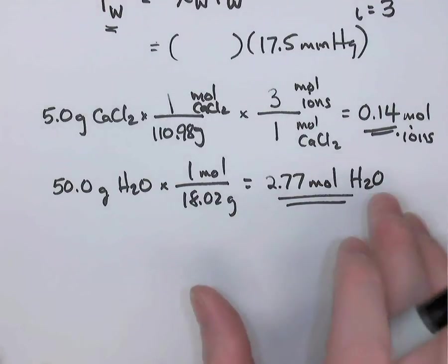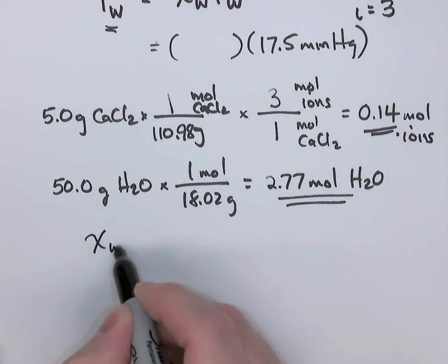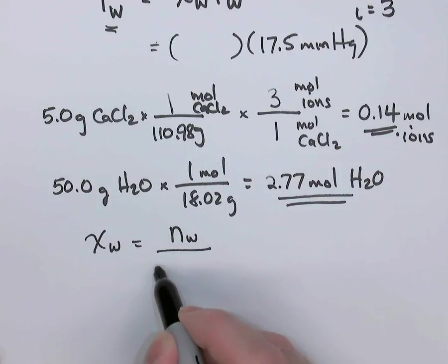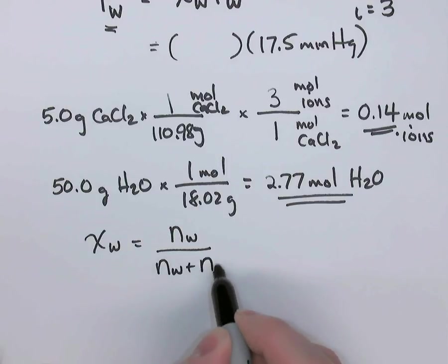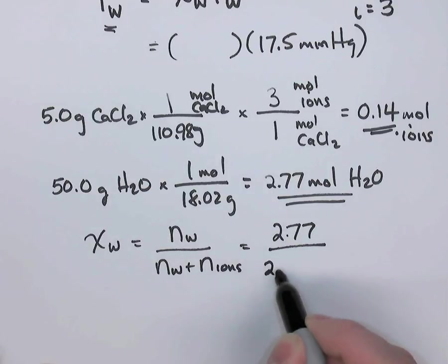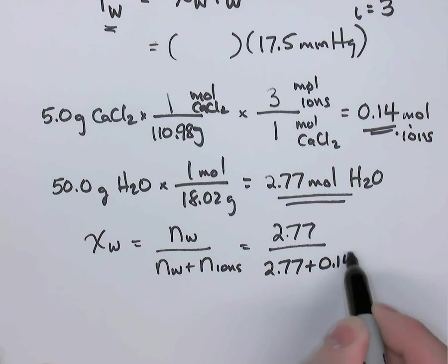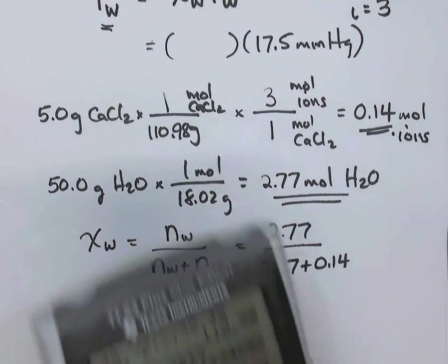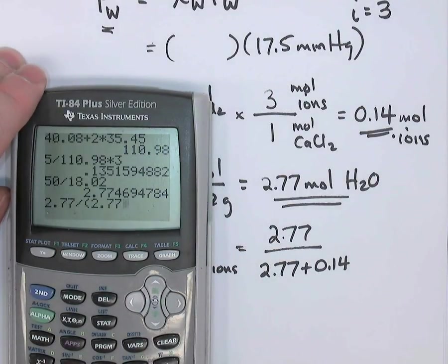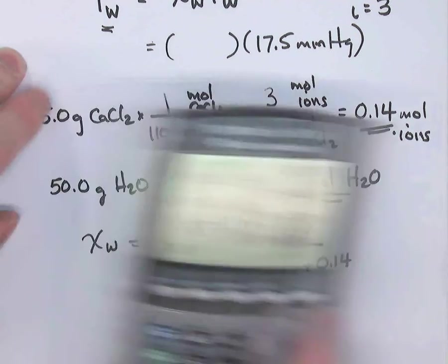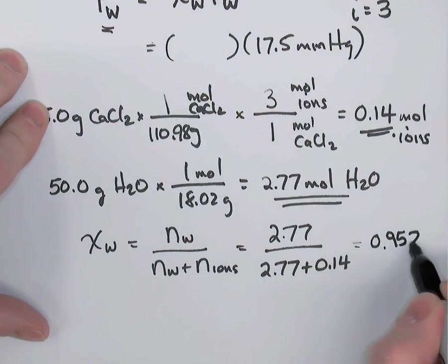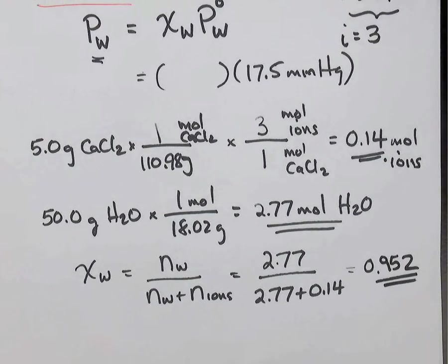So now that we've got the moles of water and moles of the solute ions, we can find the mole fraction of the water. It's equal to the moles of the water divided by the total moles, or moles of water plus moles of ions. And that's going to equal 2.77 over 2.77 plus 0.14. And we can tell, looking at that, that the mole fraction is going to be close to 1. 2.77 divided by 2.77 plus 0.14. 0.95. 0.952 is the mole fraction of the water in this solution.